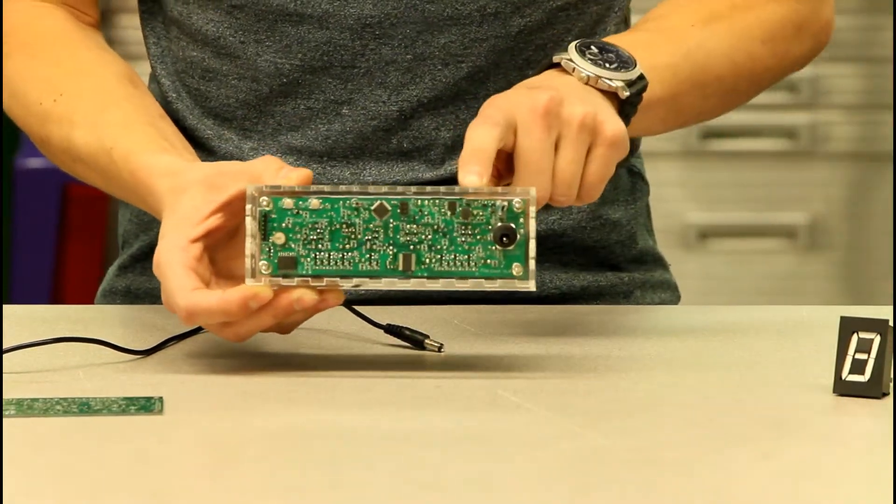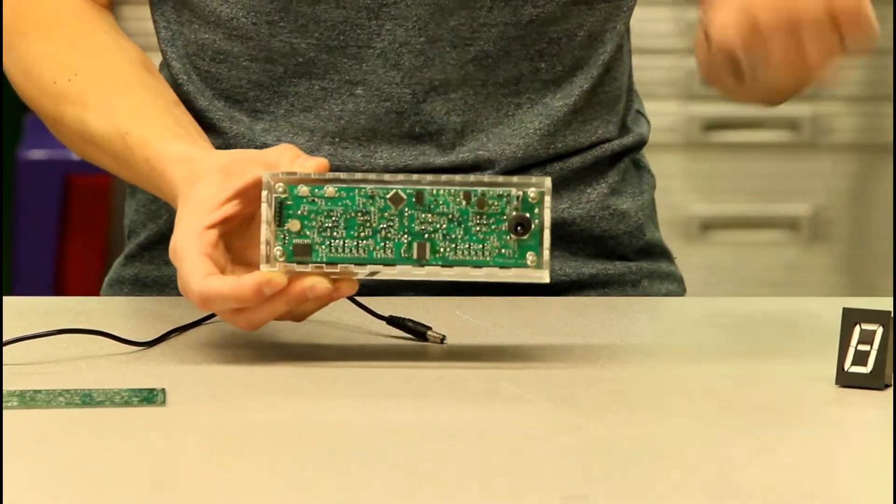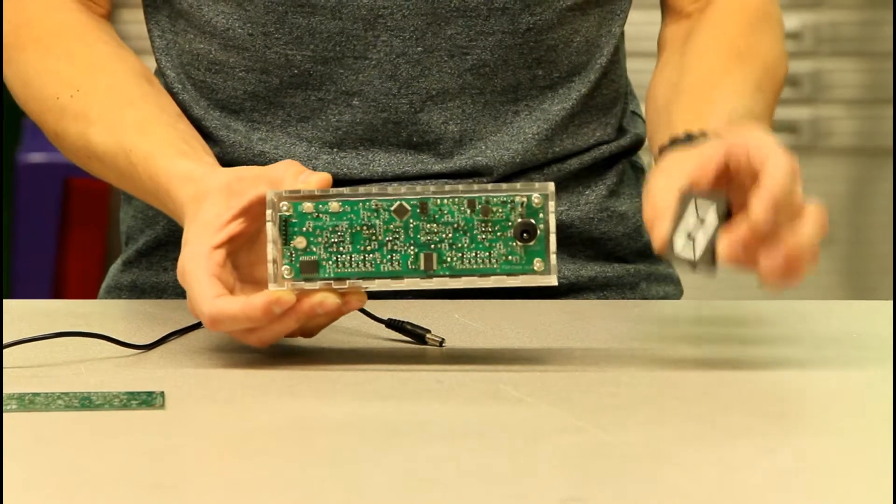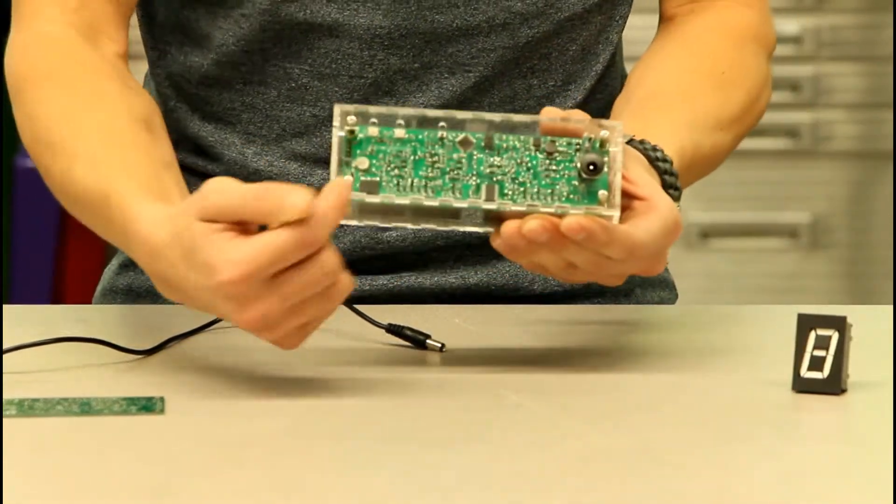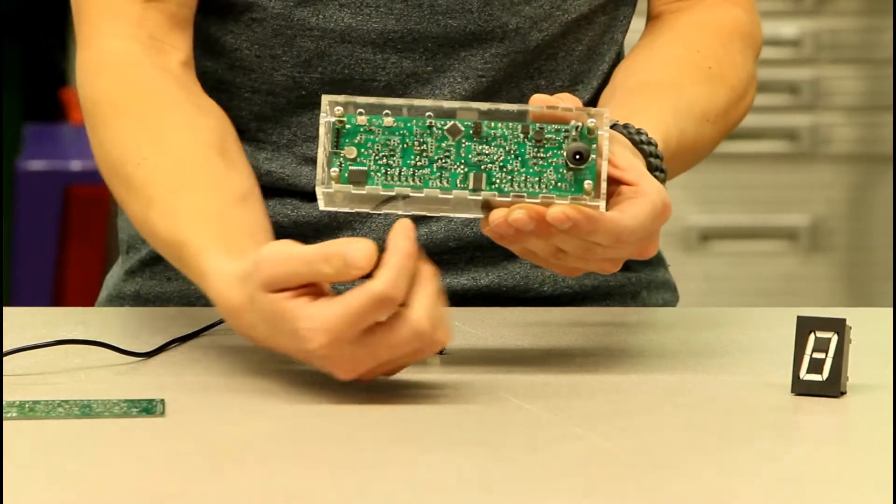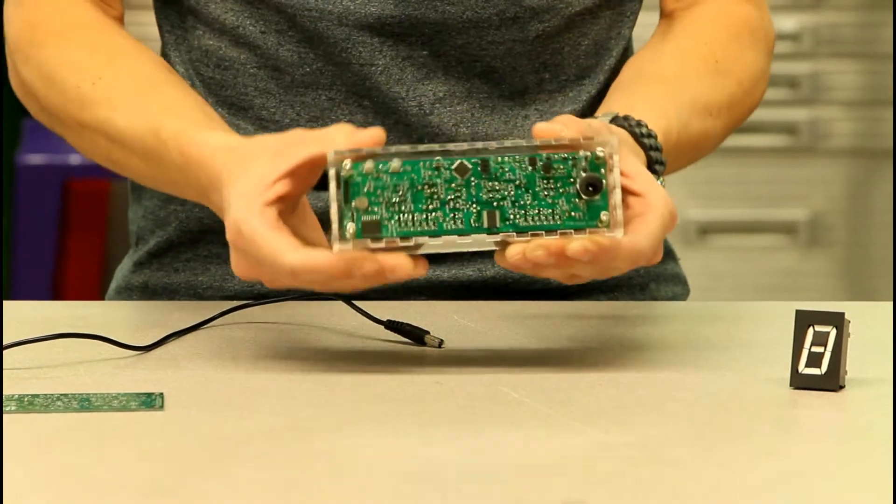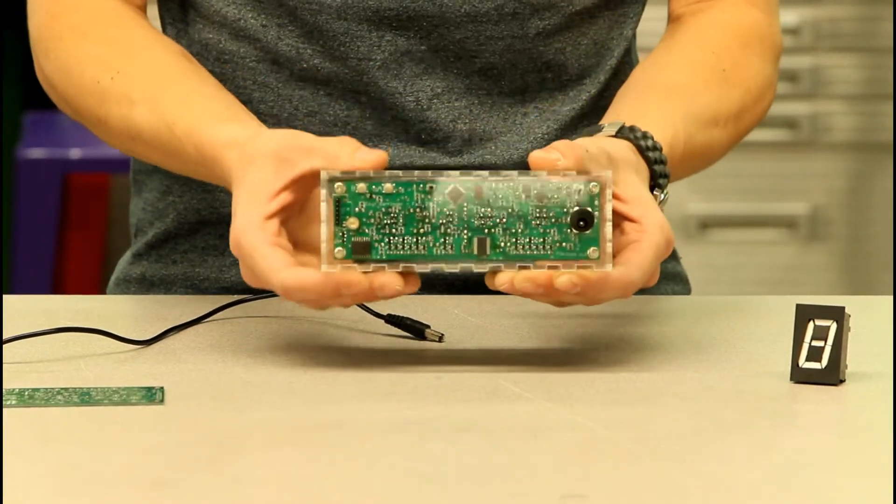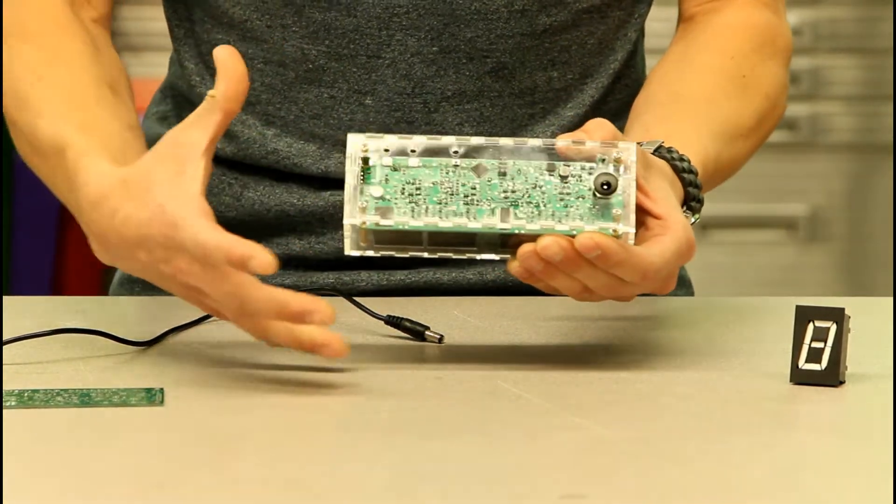We have a boost converter here which steps up 12 volts to 20 volts, because these need 20 volts to operate. And then you can see all of the little tiny transistors I used to build all of the H-bridges needed to actually control these electromagnets. So that's kind of the overview of how this works.